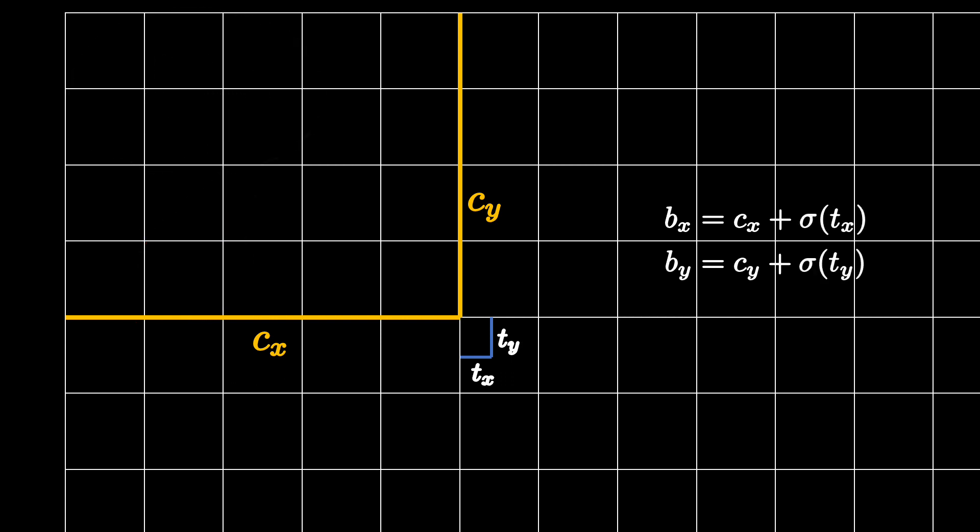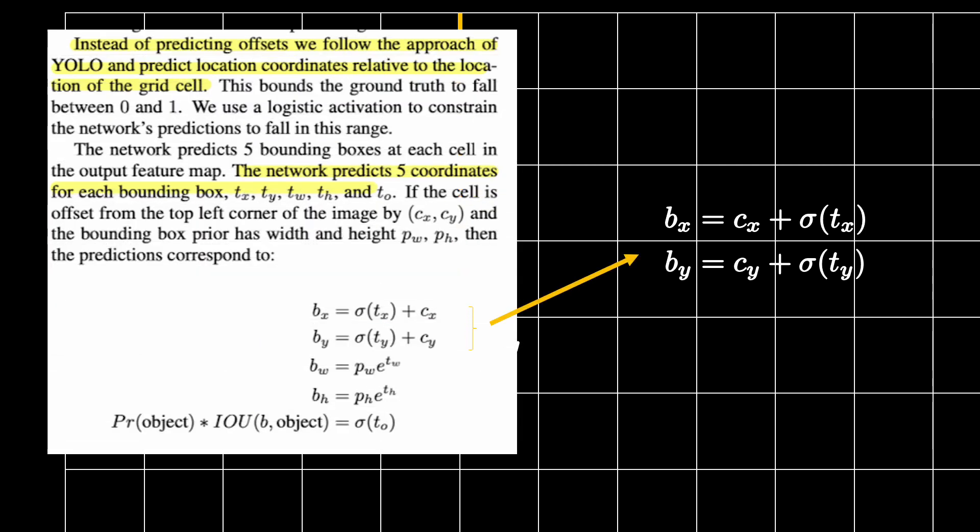This is not how neural network is going to behave because the number that it is going to predict for TX and TY is going to be a real number. It could be negative, it could be any number really. This is where we will take TX and TY and pass them through sigmoid function. Sigmoid function takes a real number and squishes it between 0 and 1. This is also shown in the YOLO V2 paper. By doing these kinds of tricks, we manage to predict the center of the bounding box coordinates by only predicting the relative coordinates within the grid cell.